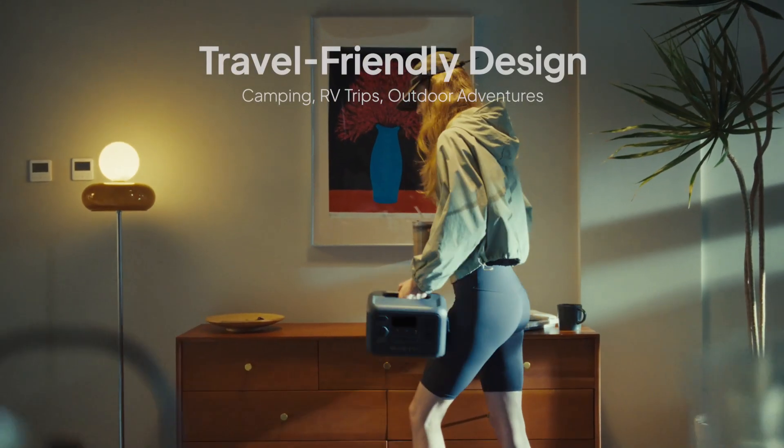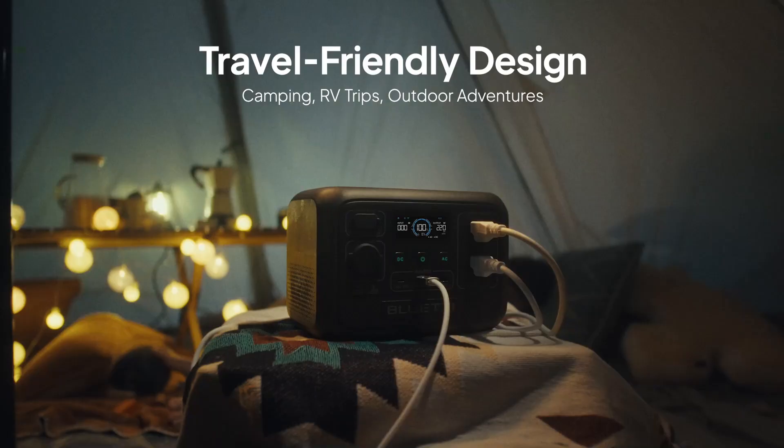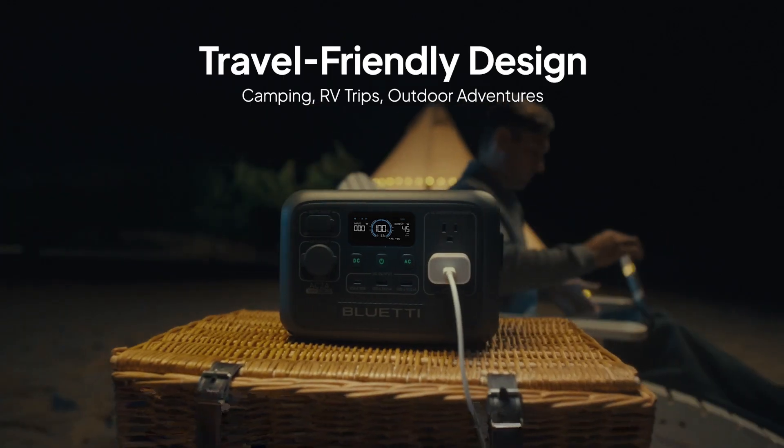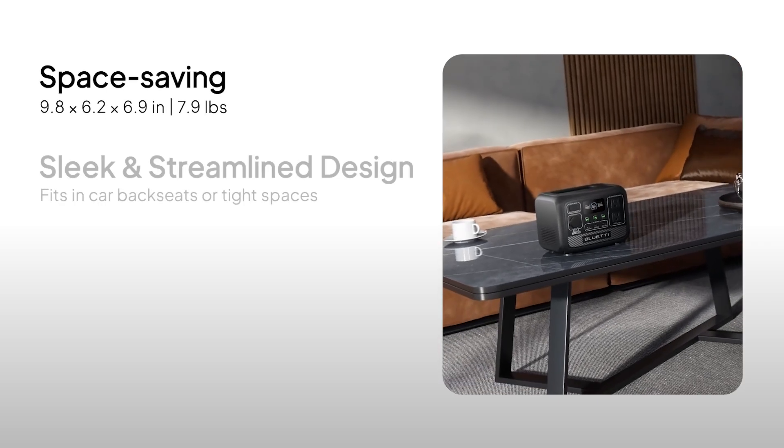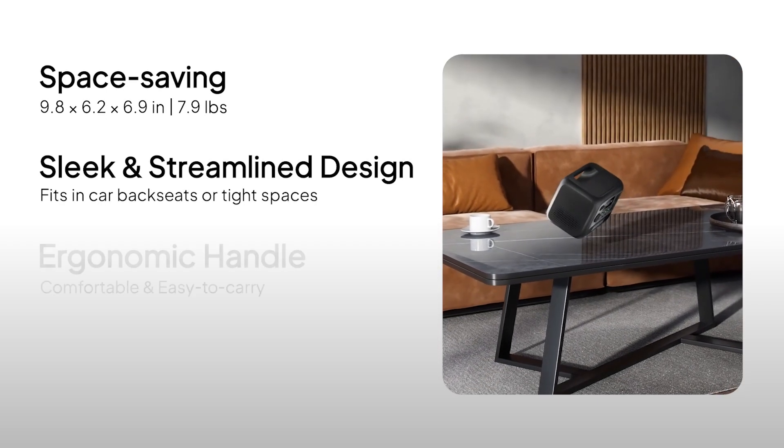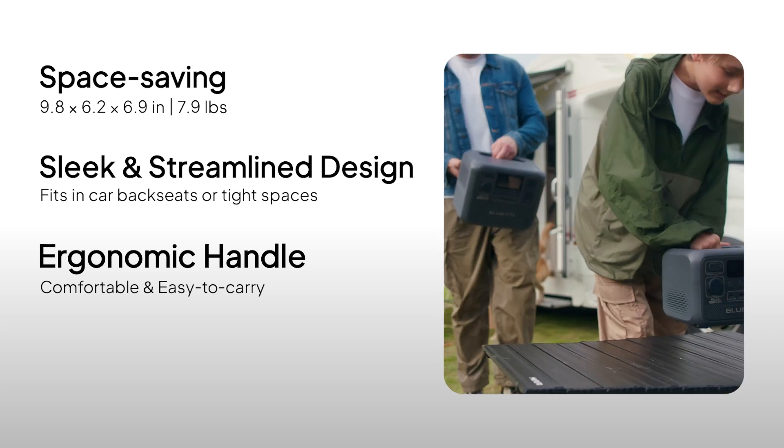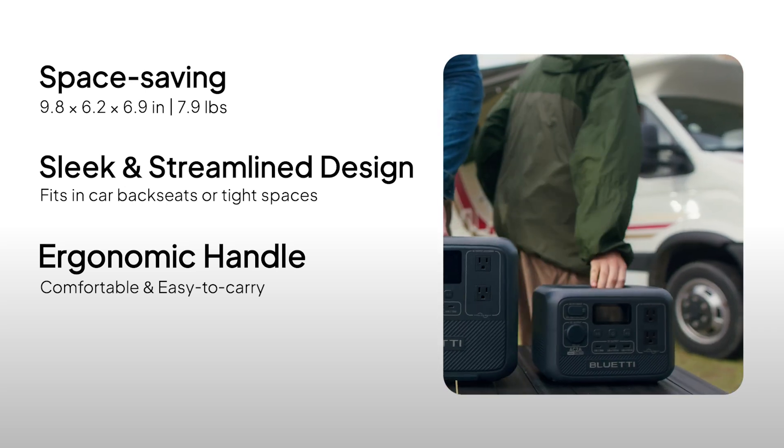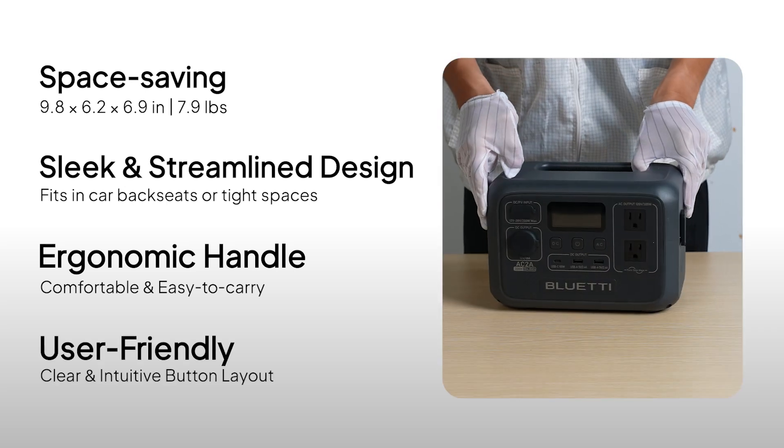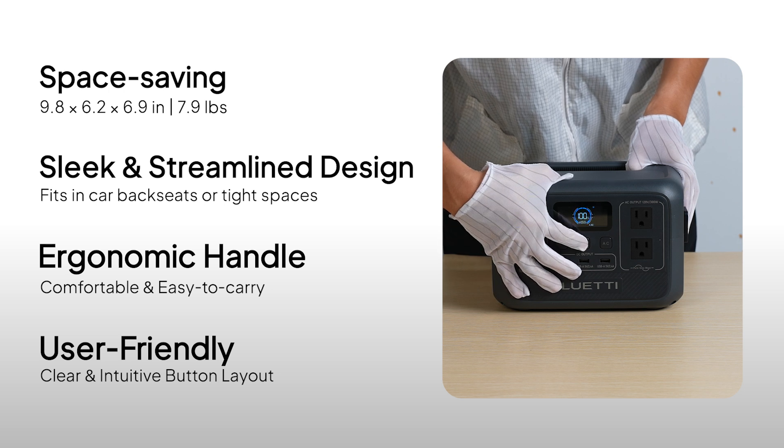The AC-2A is a compact, portable power station perfect for on-the-go adventures like camping, RV trips, or weekend getaways. Its lightweight design makes it easy to carry and store, and the built-in handle allows for effortless one-handed transport. With its intuitive controls, it's simple to use, perfect for first-time users.